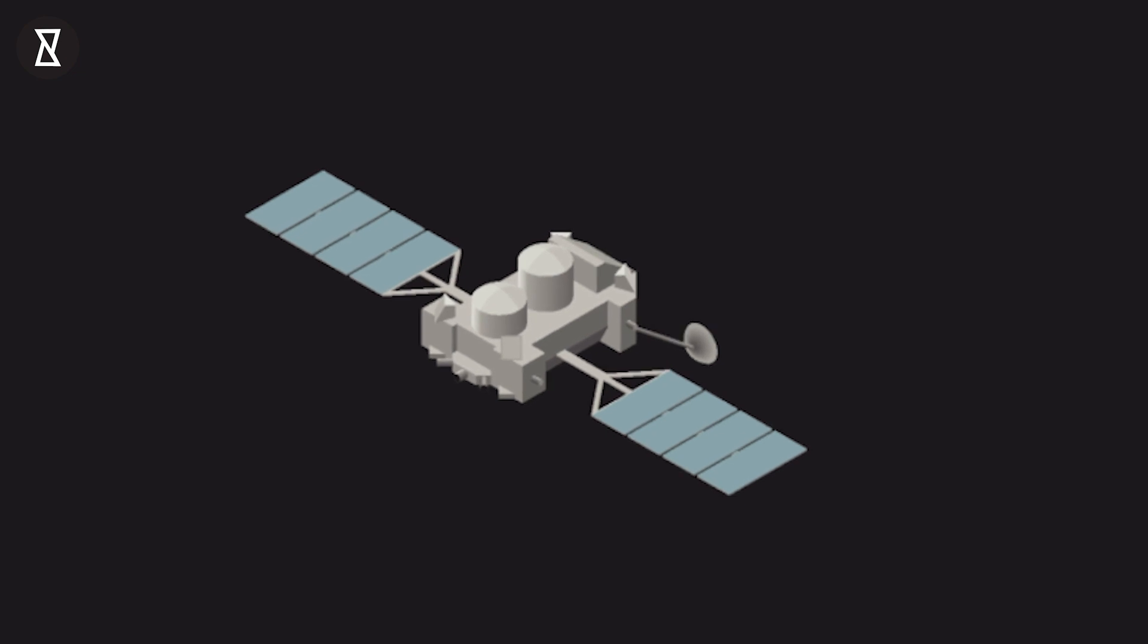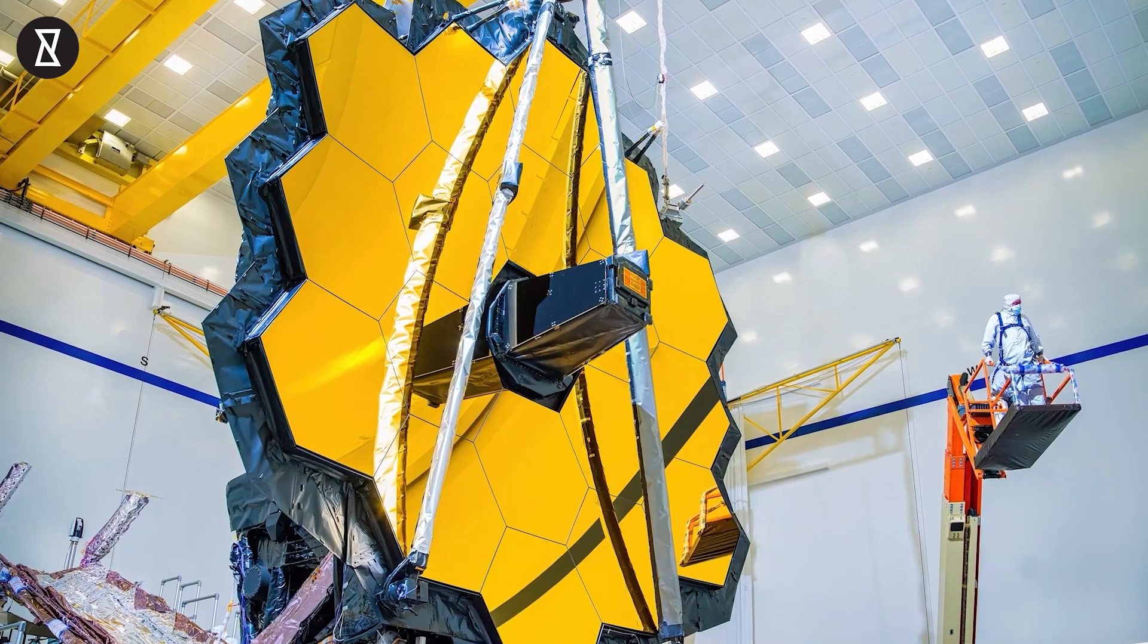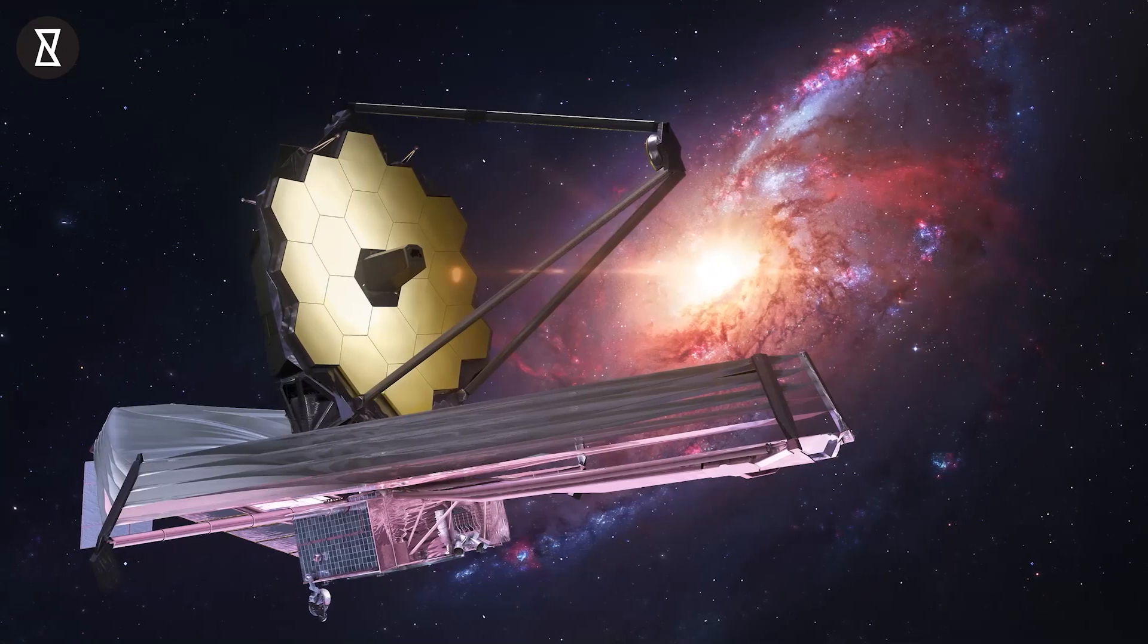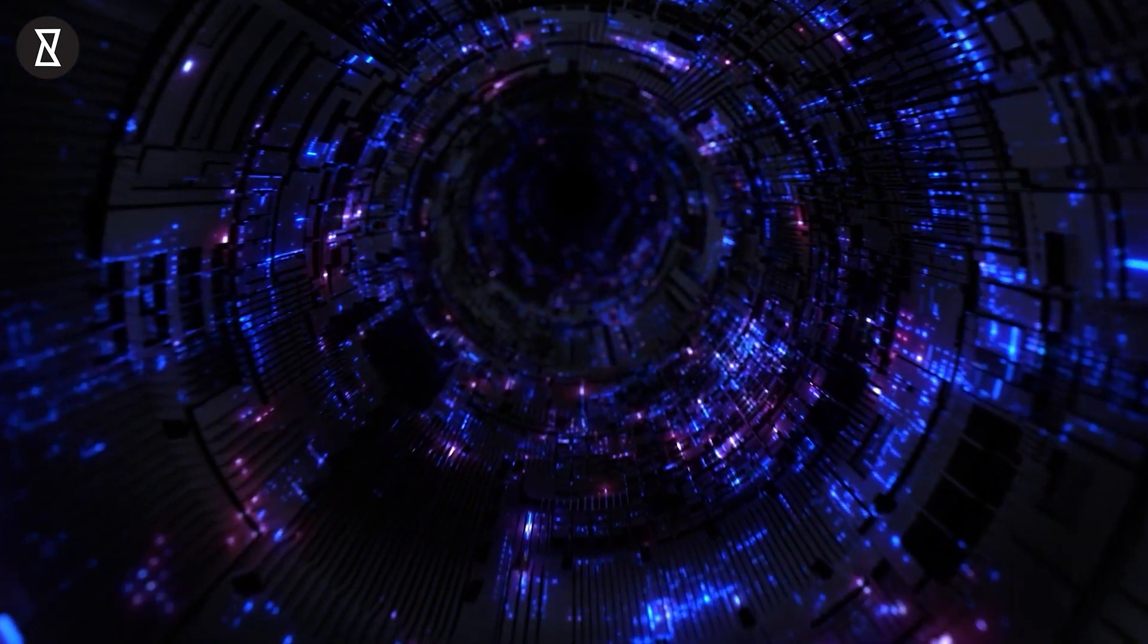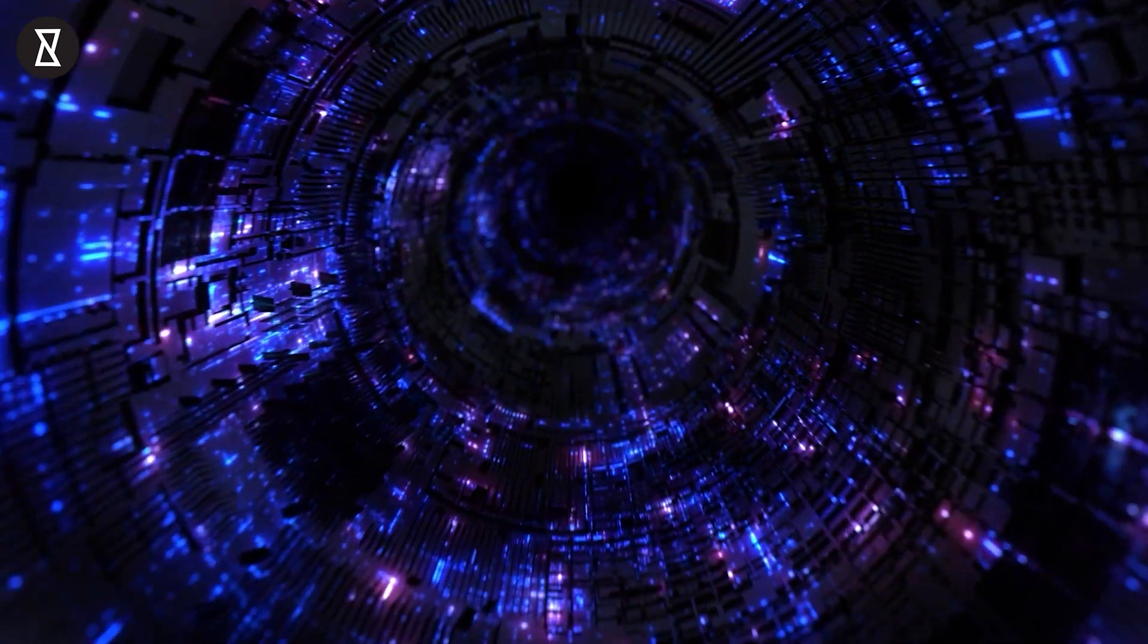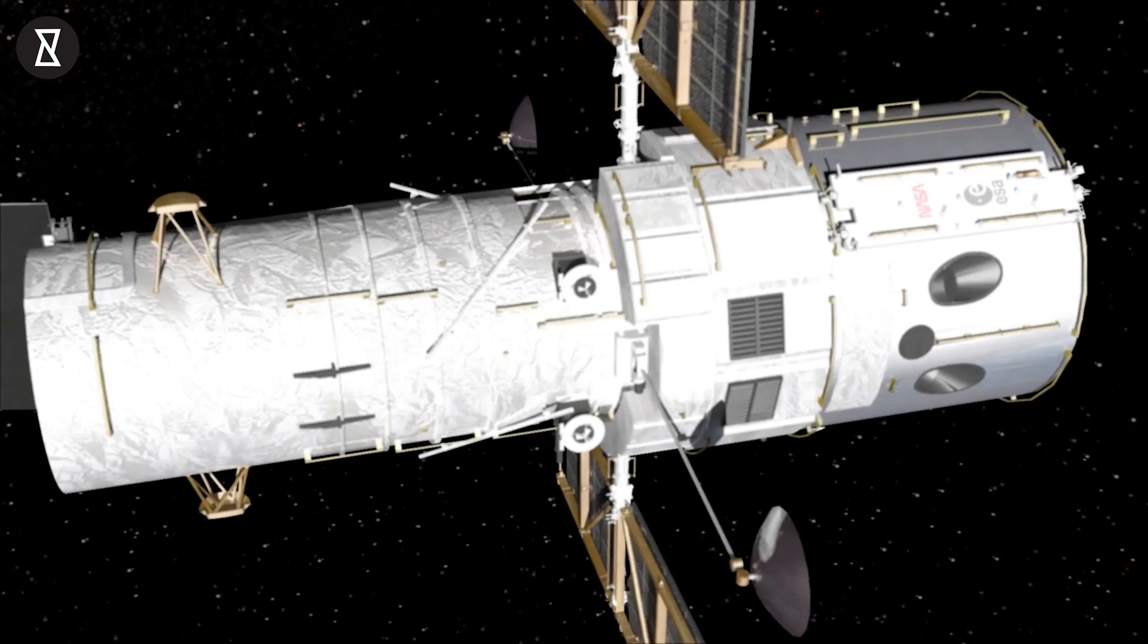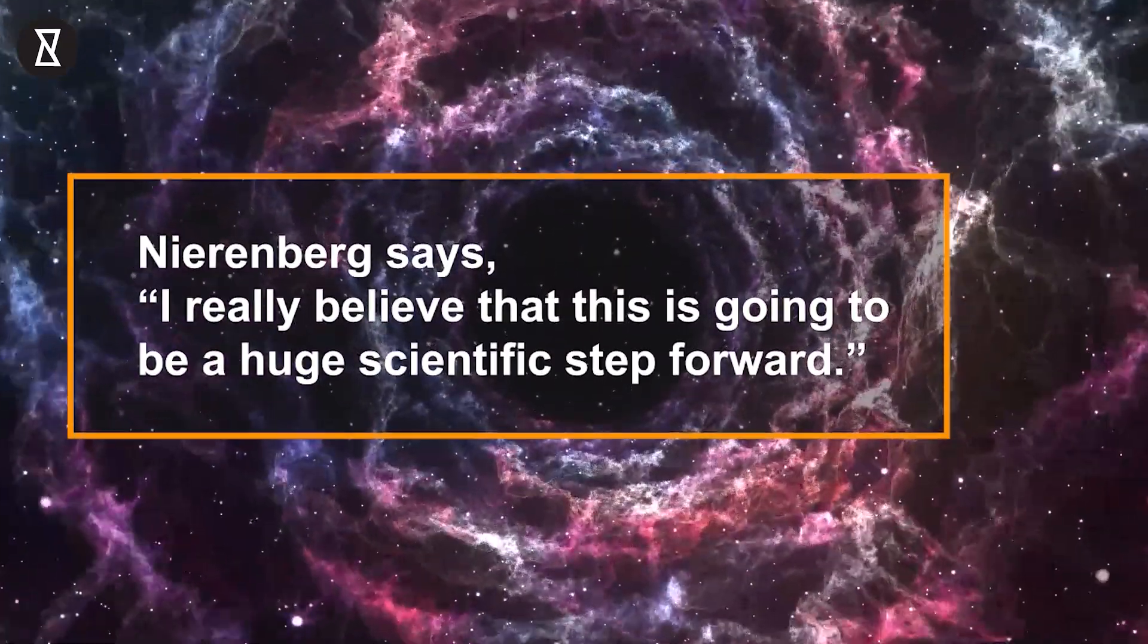And older space-based telescopes that can see in the mid-infrared don't have the resolution to separate the different lenses. Making these observations in mid-infrared requires the high spatial resolution that only the JWST can provide. "The kind of data that we can get with the James Webb Telescope is unique and much more powerful or constraining compared to the Hubble," Nierenberg says. "I really believe that this is going to be a huge scientific step forward."